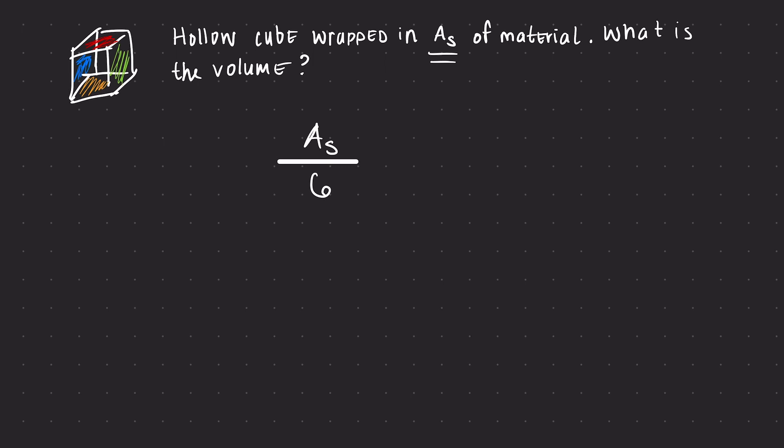And so we could actually square root this value to find the length of one side. So the square root of our surface area divided by the number of faces on the cube gives us the length of one side.